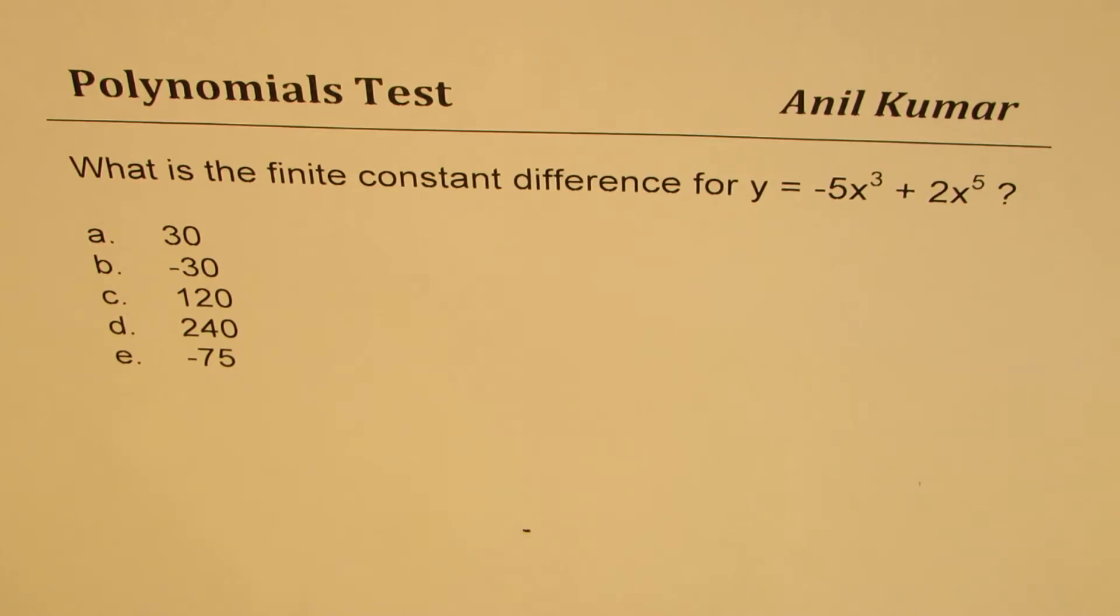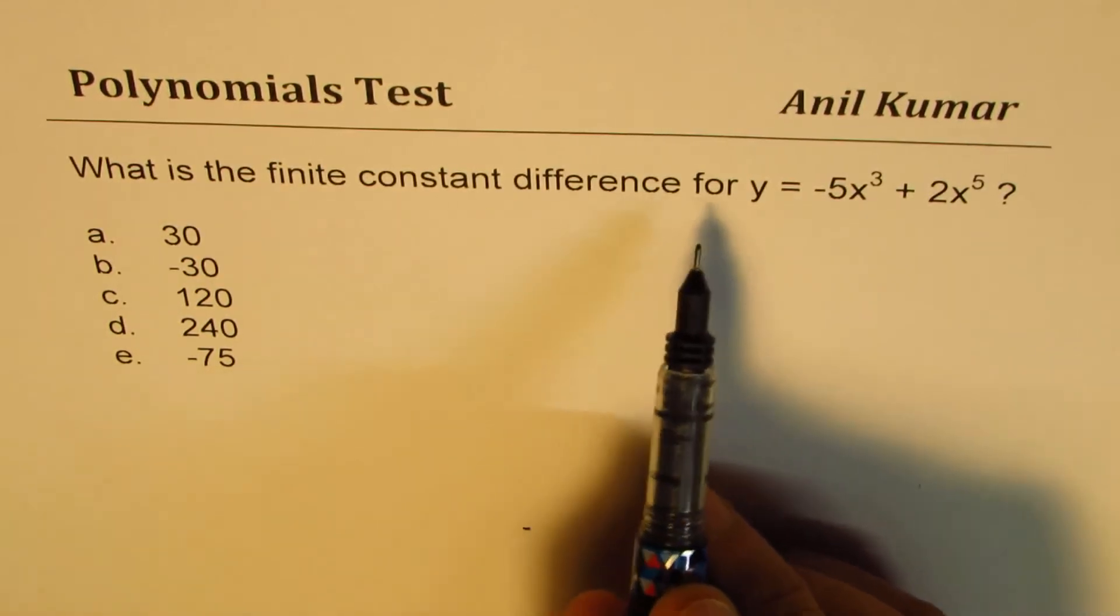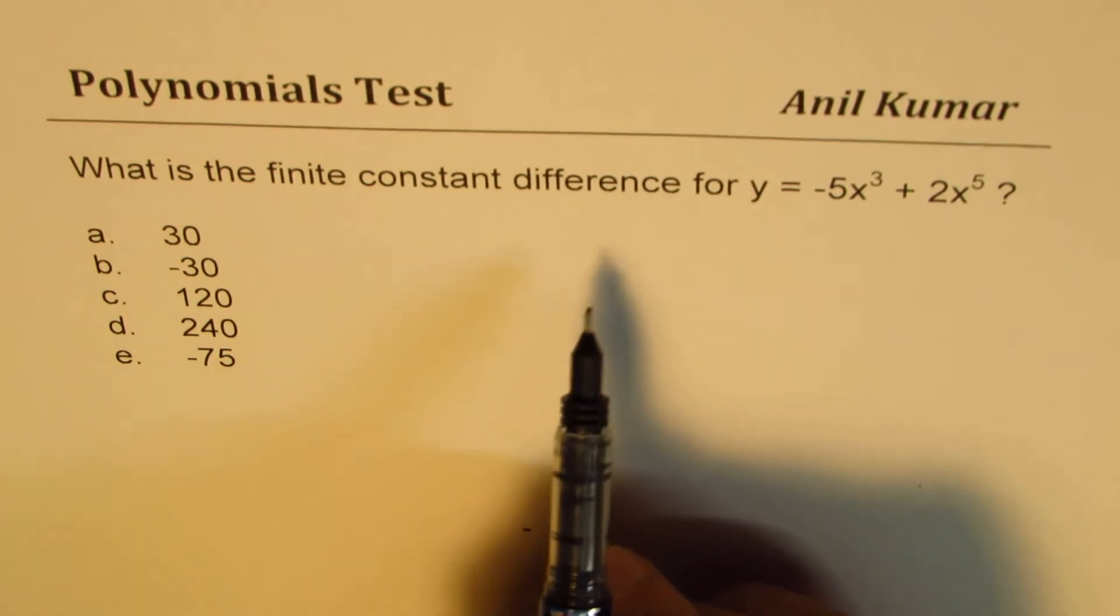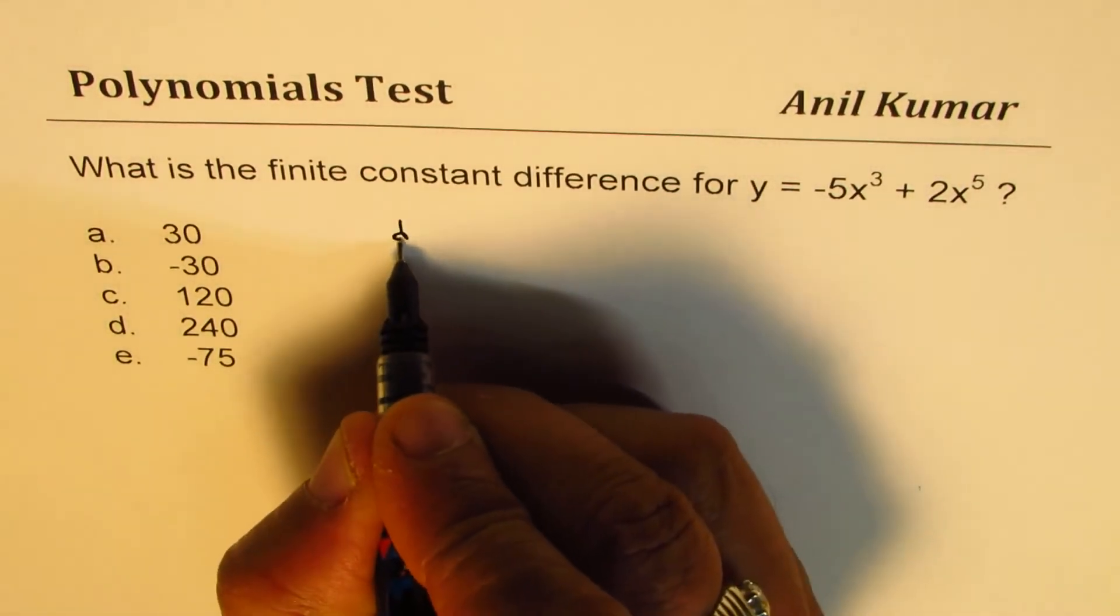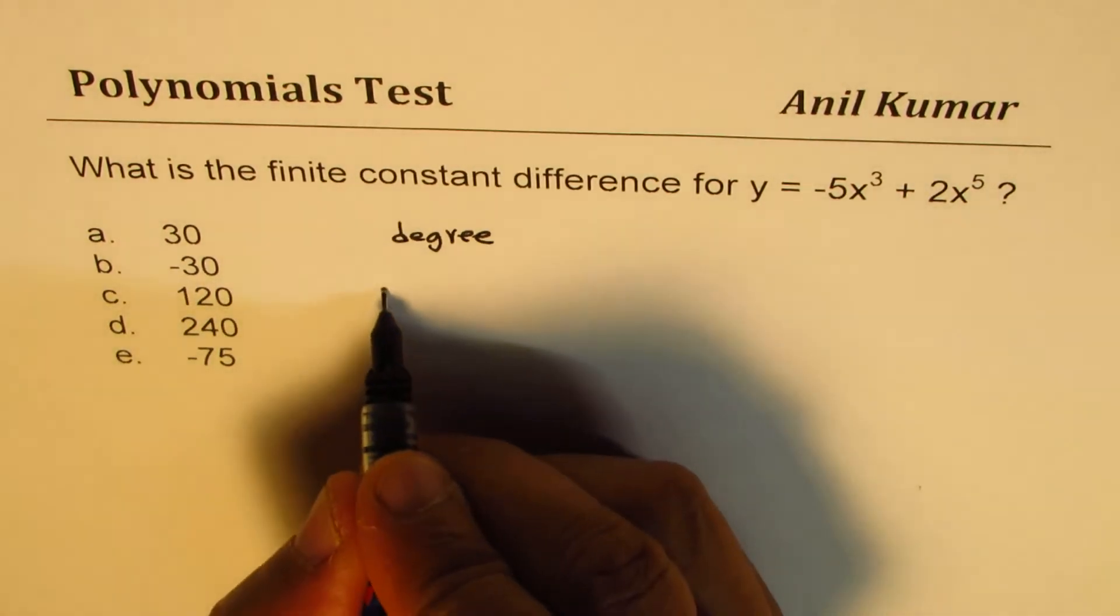To find the finite constant difference, what we need to do is to find degree of the polynomial and the leading coefficient.